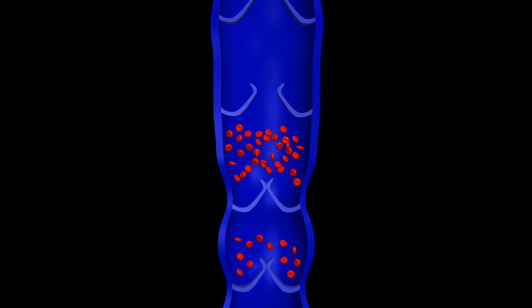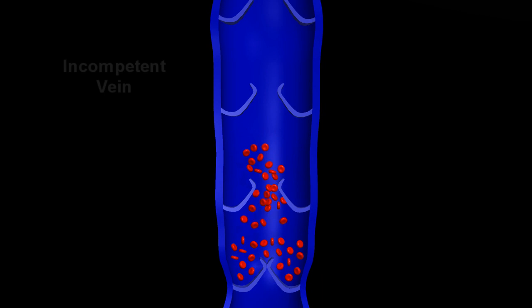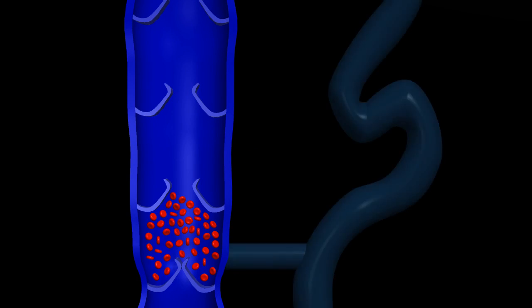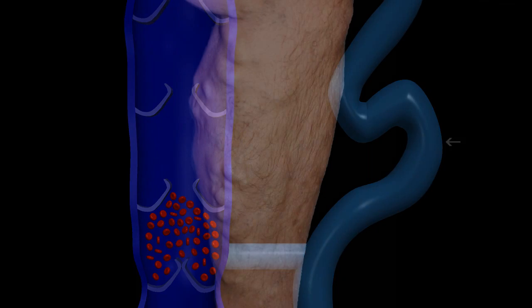Over time, this valve will eventually fail and the cycle continues until the vein becomes completely incompetent with no intact valvular system. The body then has to find an alternate way to drain the blood from this incompetent vein, so these tortuous vessels right under the skin surface dilate up and become the painful and unsightly varicosities that develop on the legs.